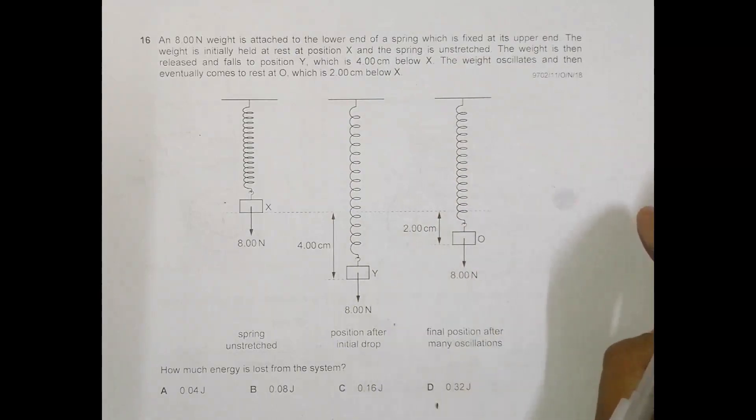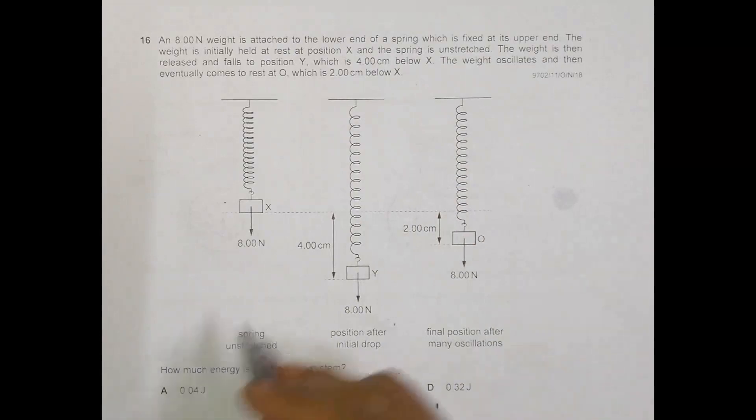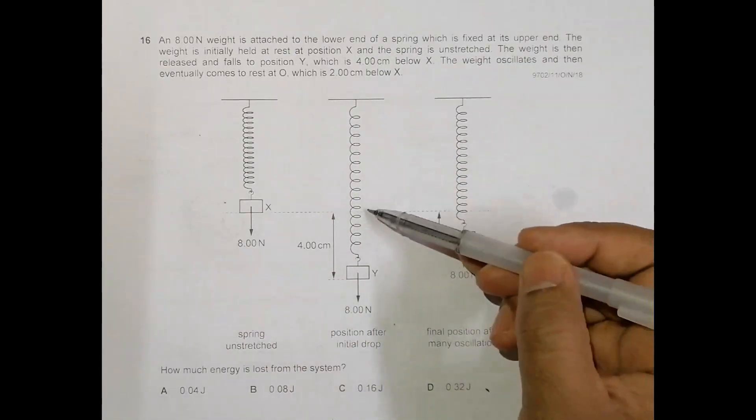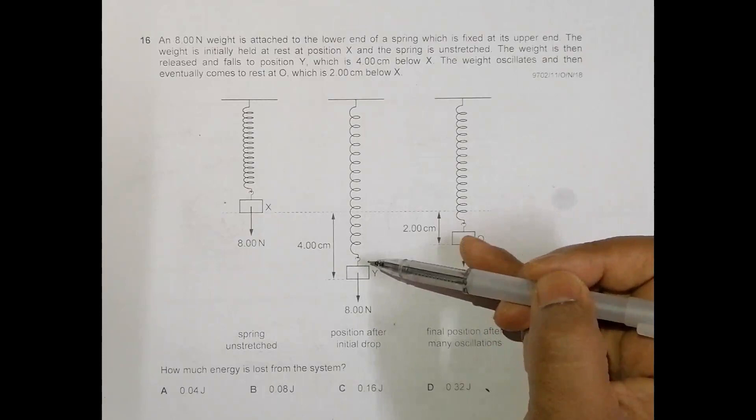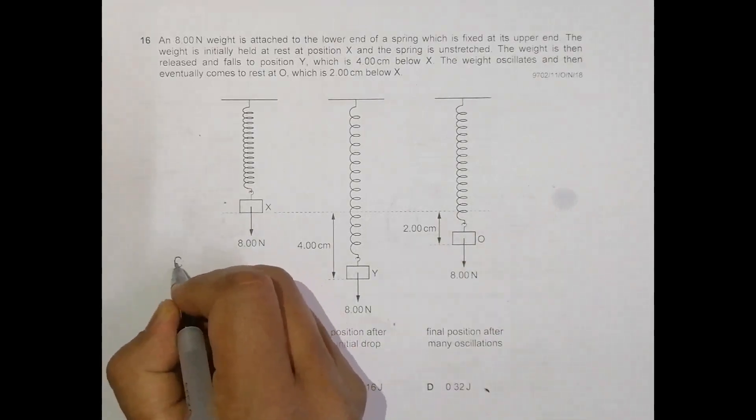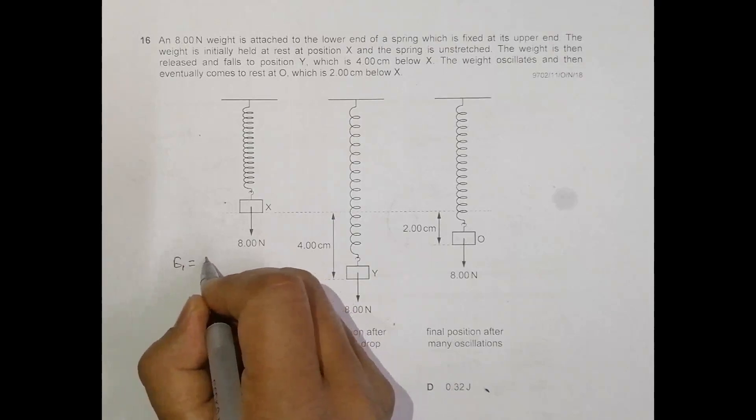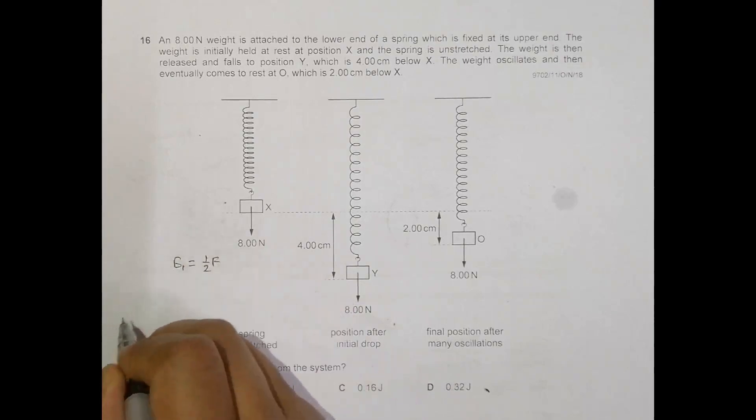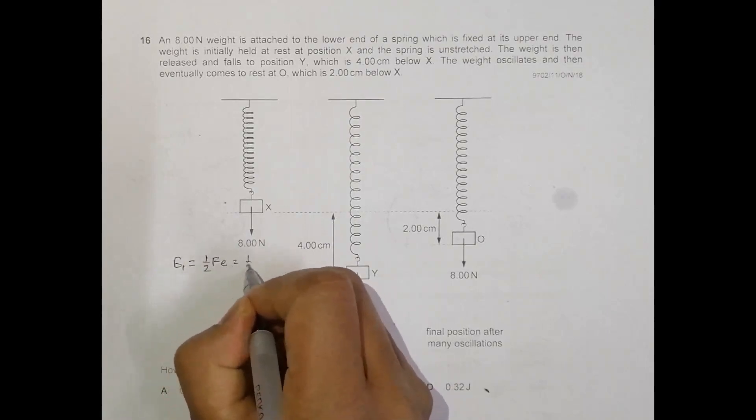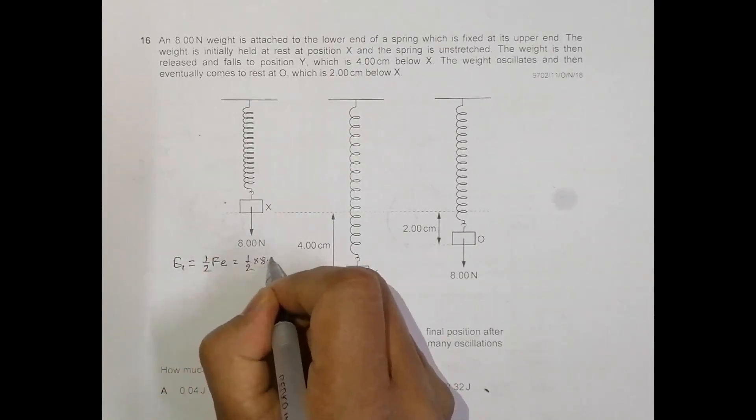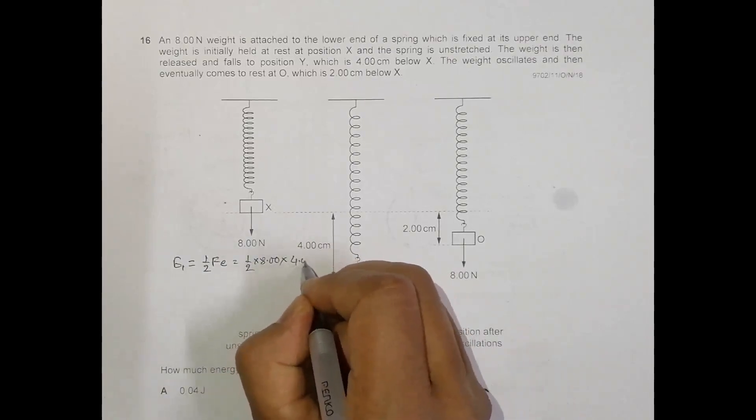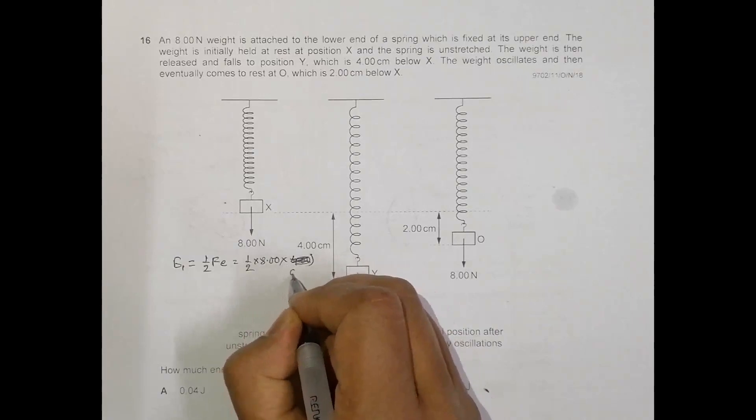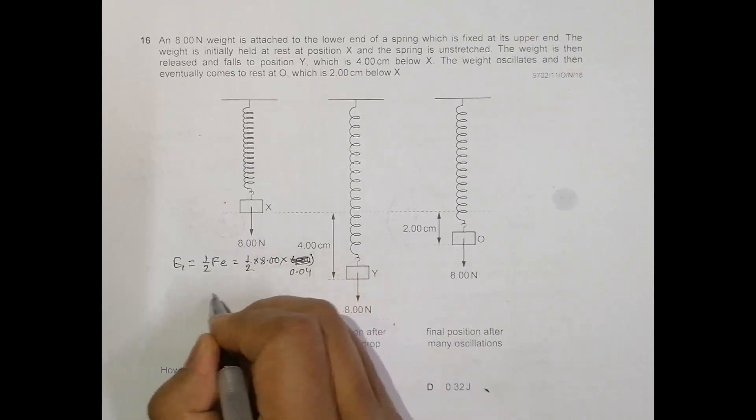Initially, what we need to do is find the elastic potential energy or strain energy stored in the system from here to here. So let's say this is equal to E1. E1 equals 1/2 times force times extension. That's equal to 1/2 times 8.00 times the extension, which is 4.00 centimeters or 0.04 meters.